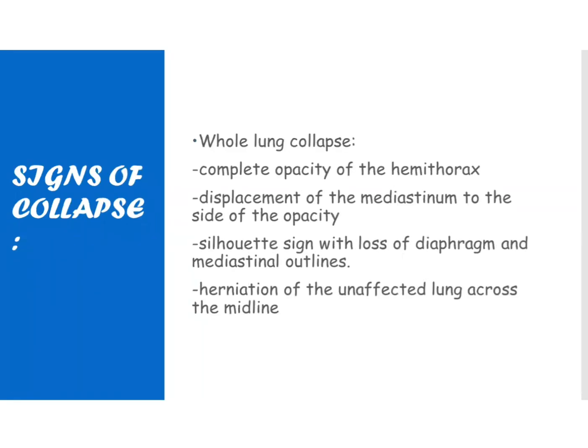What are the signs of lung collapse? If you look at whole lung collapse, there'll be a complete opacity of the hemithorax, displacement of the mediastinum to the side of the opacity. If you remember when we talked about pneumothorax, displacement is to the opposite side. In collapse, it's displacement to the affected side. Silhouette sign will be lost, loss of diaphragm and mediastinal outlines, herniation of the unaffected lung across the midline.